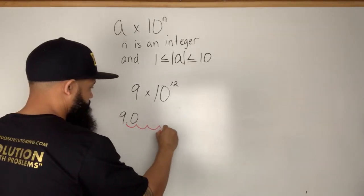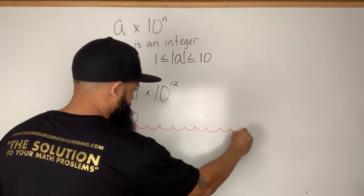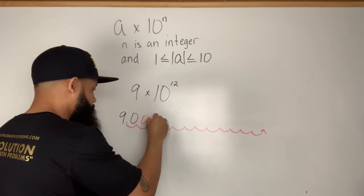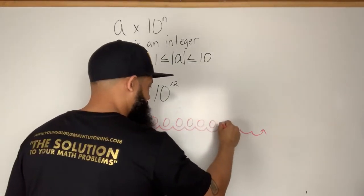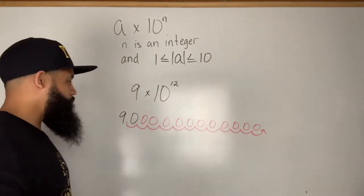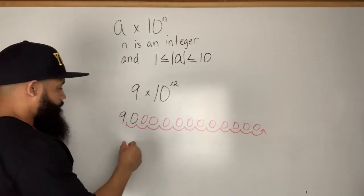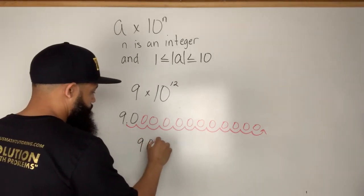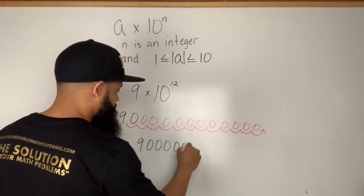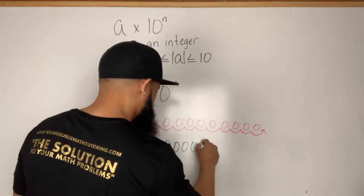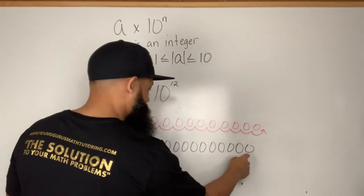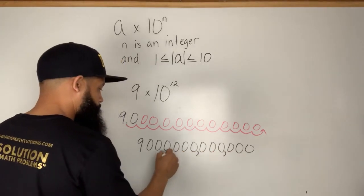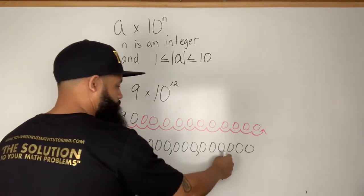Moving the decimal 12 places to the right: one, two, three, four, five, six, seven, eight, nine, ten, eleven, twelve. My decimal ends up there. I fill each little gap with a zero, so I end up with 9 followed by twelve zeros. Let's put in our commas — and counting by threes: hundred, hundred thousand, hundred million, hundred billion — nine trillion.